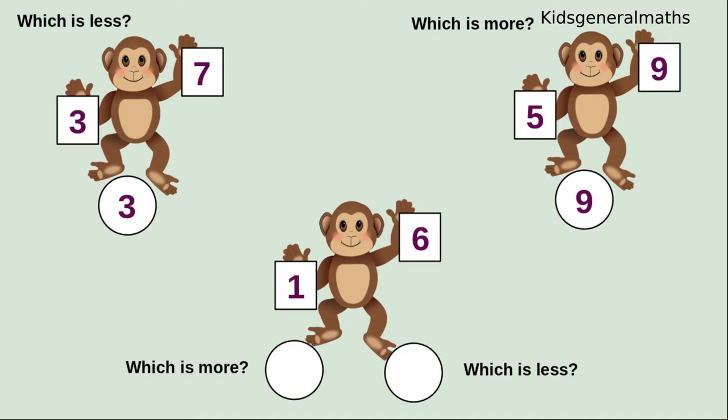The next monkey has two numbers: 1 and 6. First we are going to find which is more. The more is 6. So next, which is the less number? 1 is the less number.